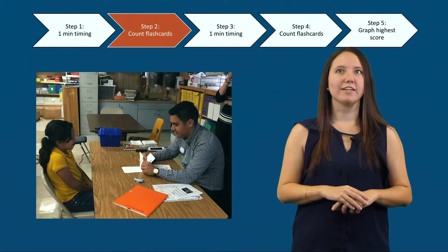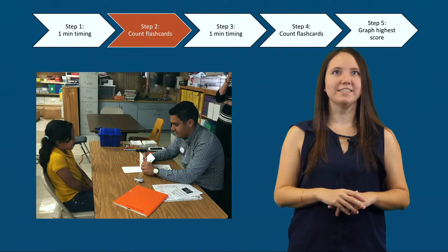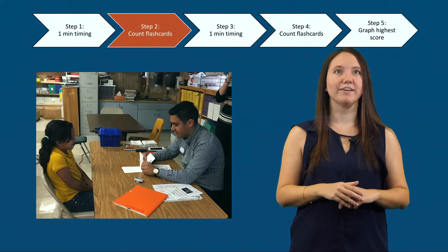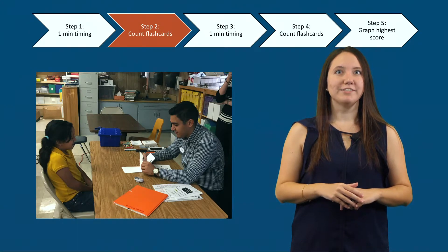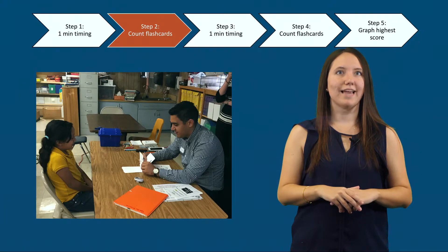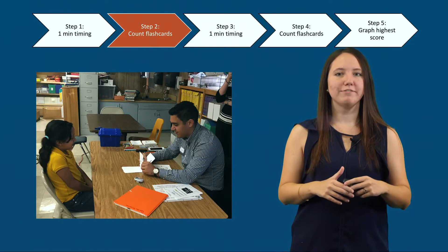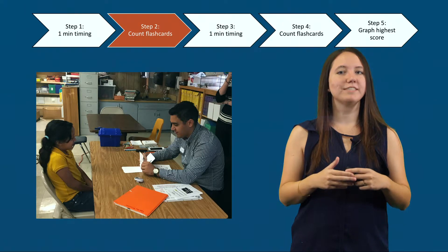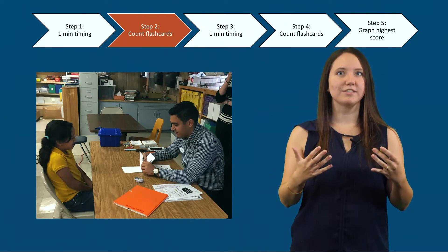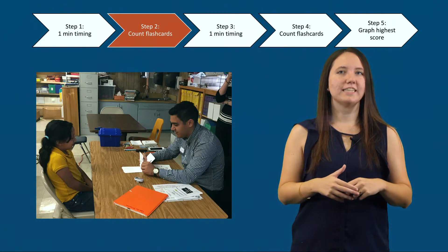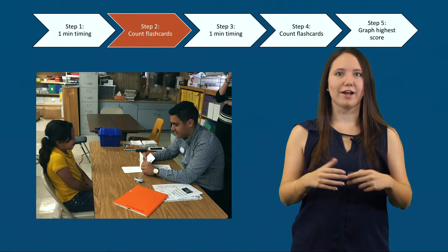Step two is to count flashcards. The teacher and the student count the number of correct flashcards in the correct discard pile. You can allow the student to count the flashcards with you to provide an additional opportunity to practice counting skills. The teacher then tells the student how many flashcards he or she answered correctly — for example, five flashcards — and asks if he or she thinks they can beat that score in the second trial.